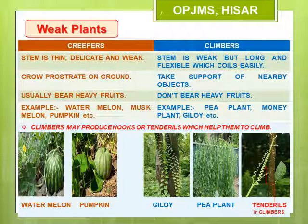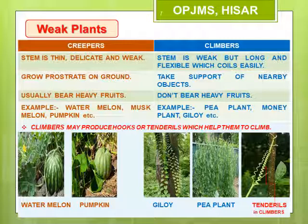Creepers do not climb up even with the help of a support because they bear very heavy fruits, for example pumpkin, watermelon, muskmelon, etc. On the other hand, climbers also have weak stems but their stems are long and flexible, so they take support of walls or other plants to climb up. Some climbers twine around the supporting plant in a spiral manner, like the money plant, whereas others produce hooks and tendrils to climb, for example the pea plant.